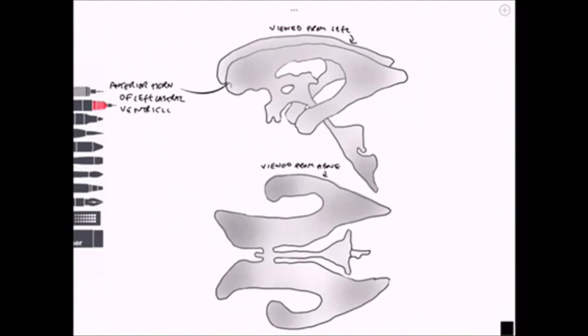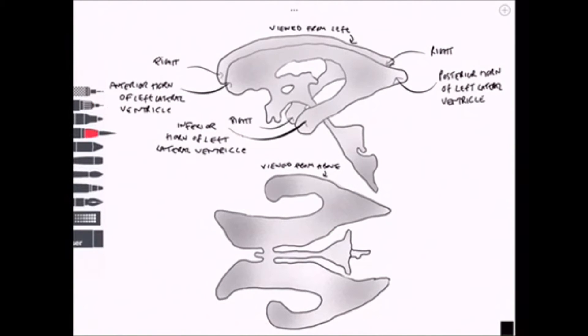Here we can see the anterior horn of the left and right lateral ventricles. We can see the posterior horn of the ventricles as well. Also we can see the individual inferior horns, the left and right inferior horns of the lateral ventricles, and we can see the connection with that C-shape. We can see the third ventricle and the fourth ventricle as well.